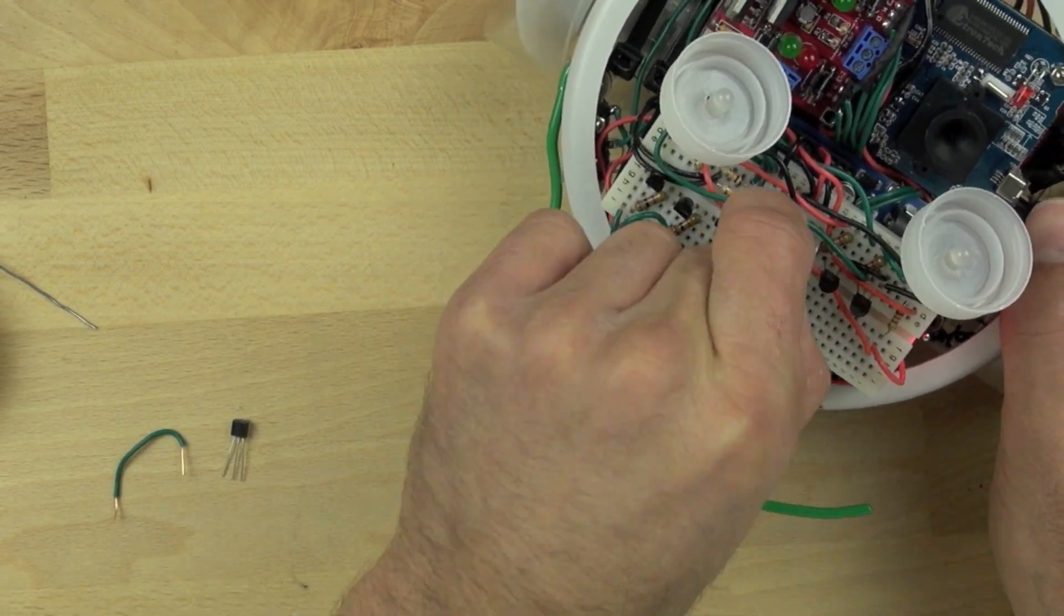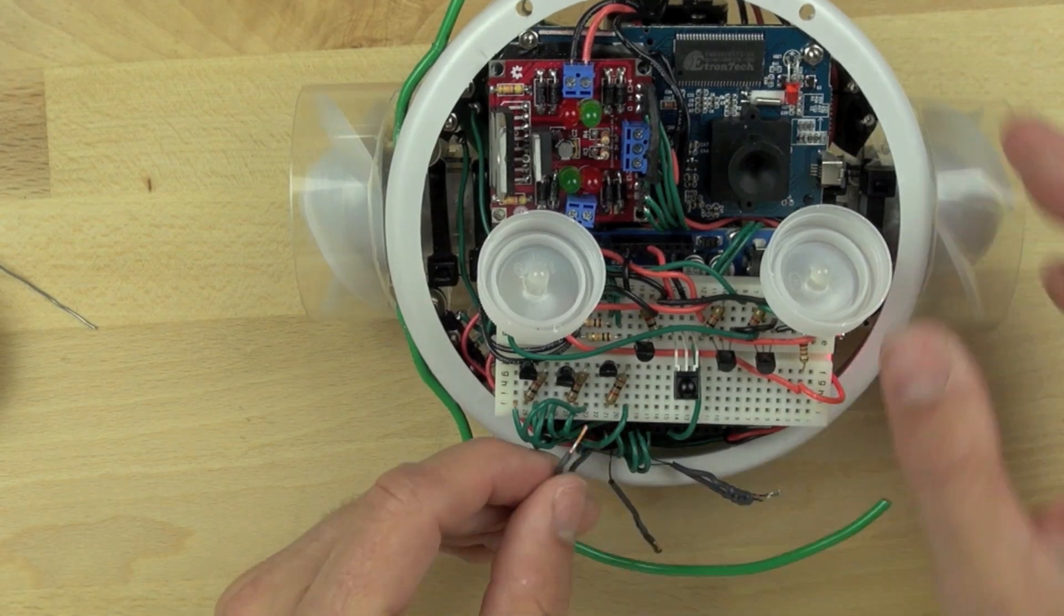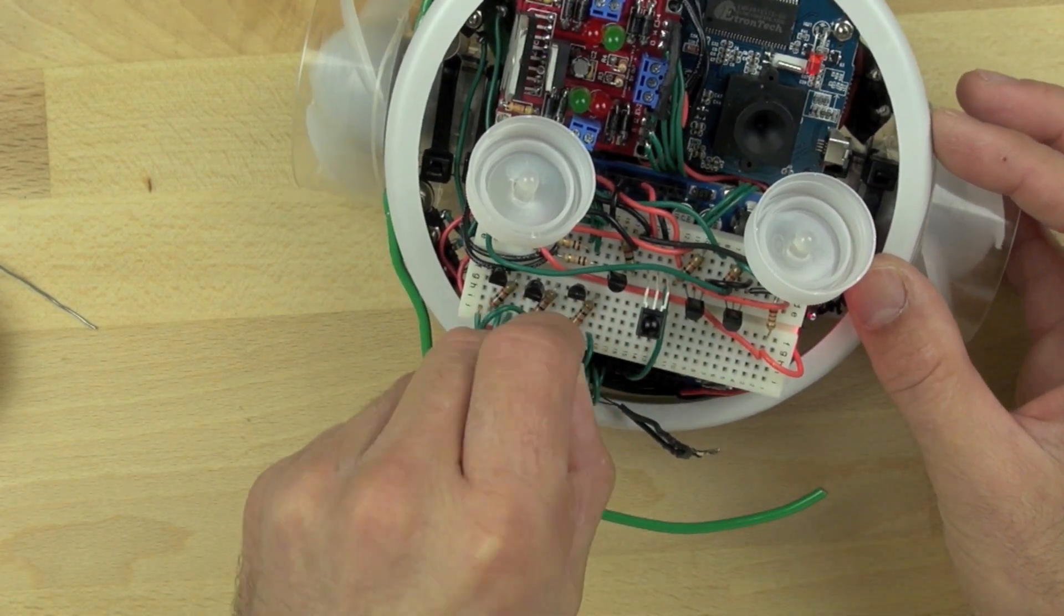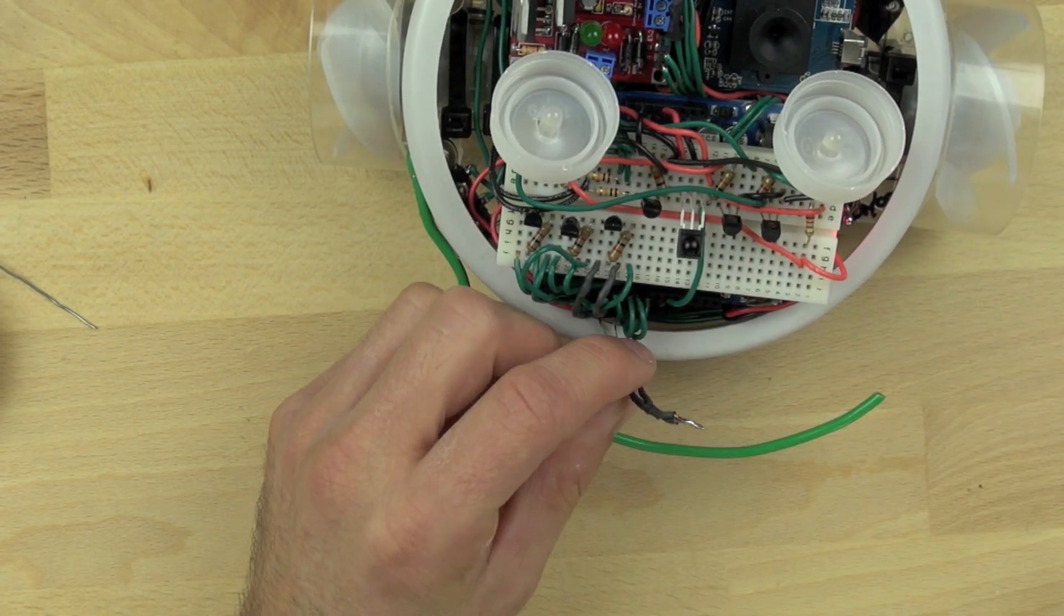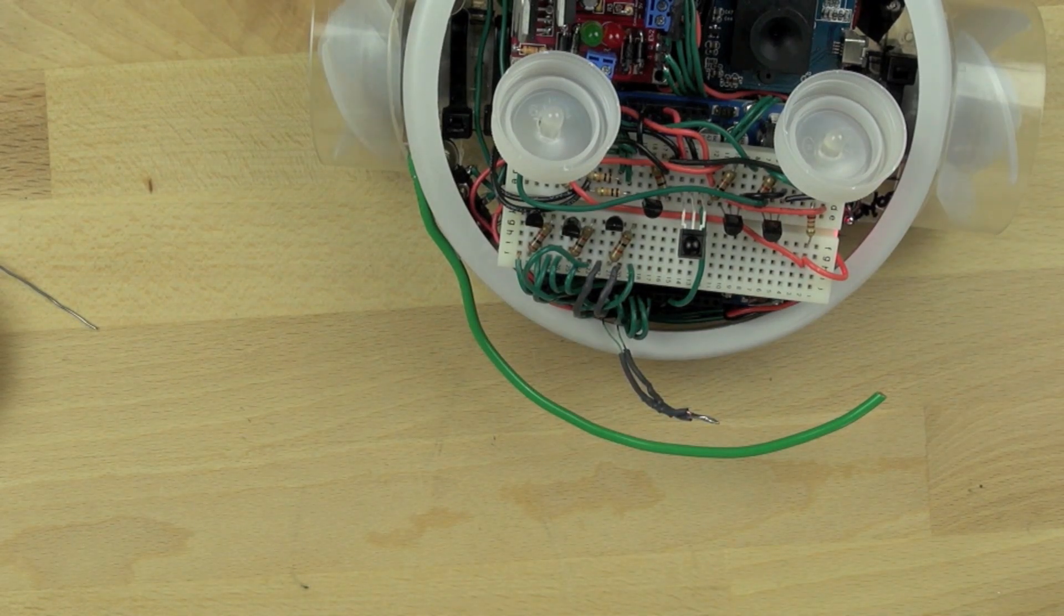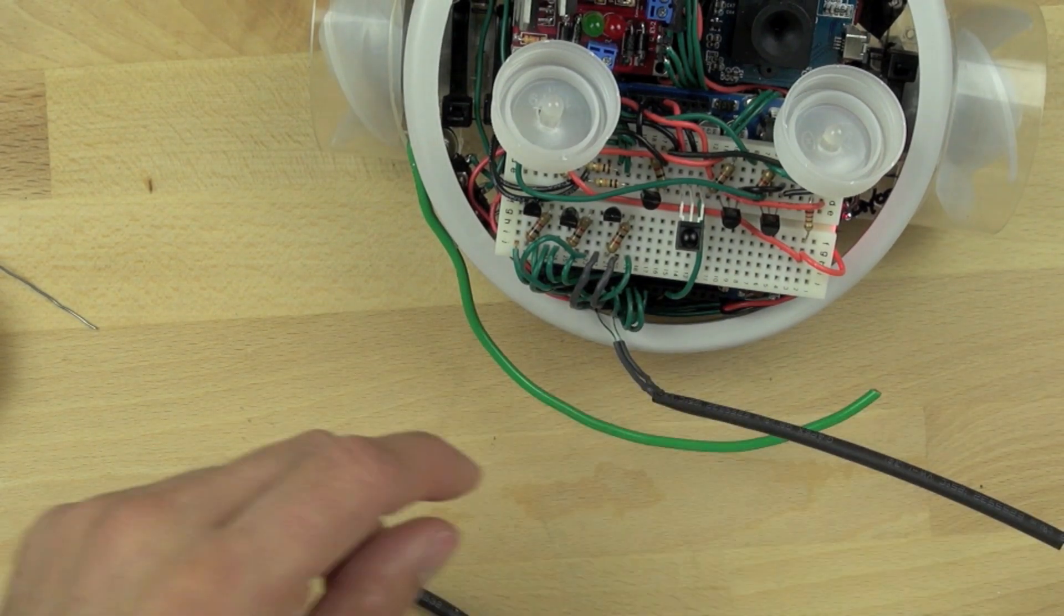So we're taking out the transistor and resistor for the power button and reconnecting our shutter button. And so that should accelerate the time that it takes to take pictures. Now this may drain our battery faster, but at this point in time, that's okay.